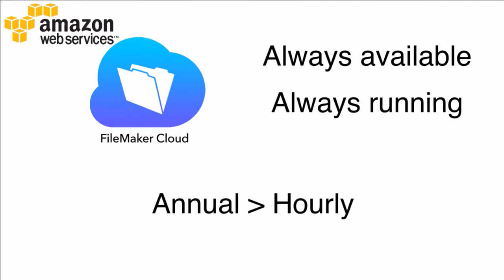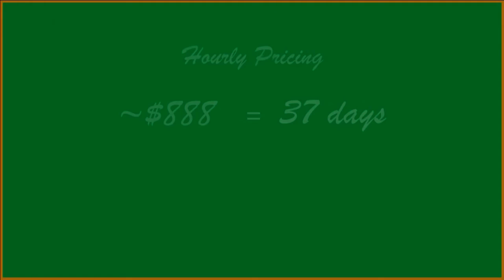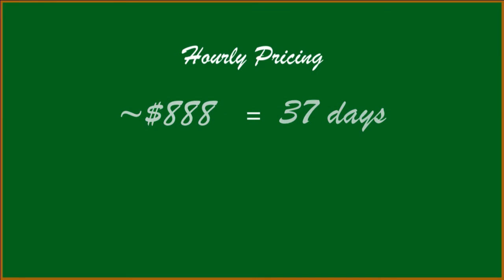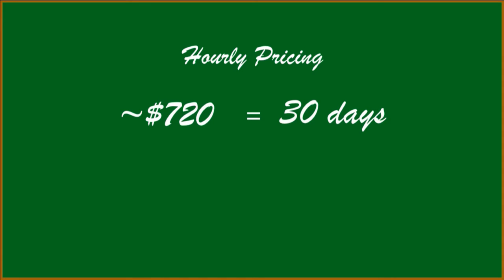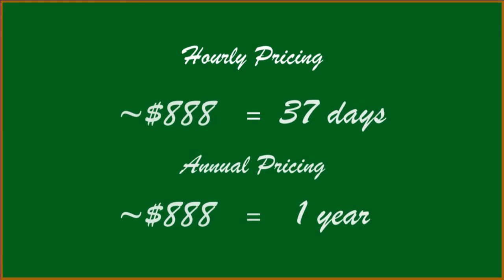If you know that you're going to need FileMaker for less than 37 days, then it makes sense to use it hourly and then shut it off. However, 37 days of hourly is roughly equivalent to $888, which is the price for a one-year annual license for a five-pack of users.